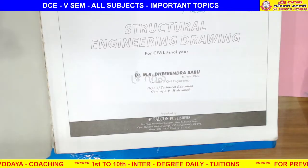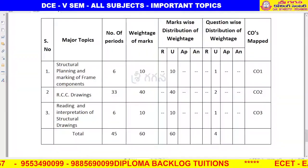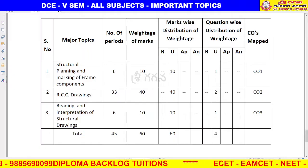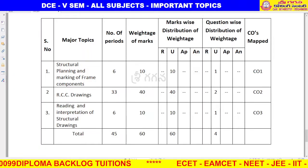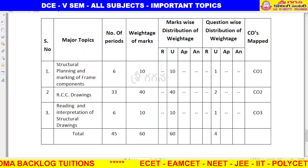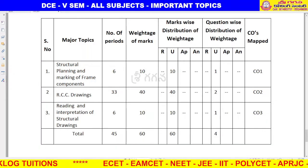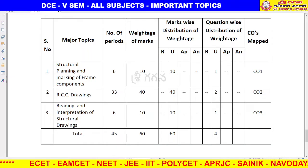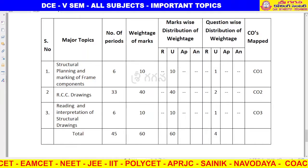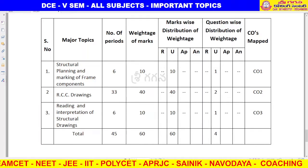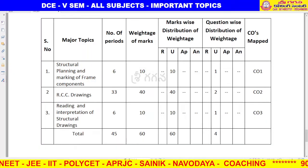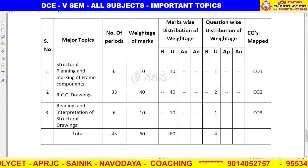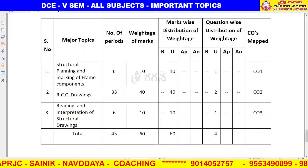First, we will go through the syllabus and then see the important questions. We have three chapters, three units. The question paper pattern has 4 questions total — there are 10-mark questions and 20-mark questions. There are two 20-mark questions and some 10-mark questions covering the three units.